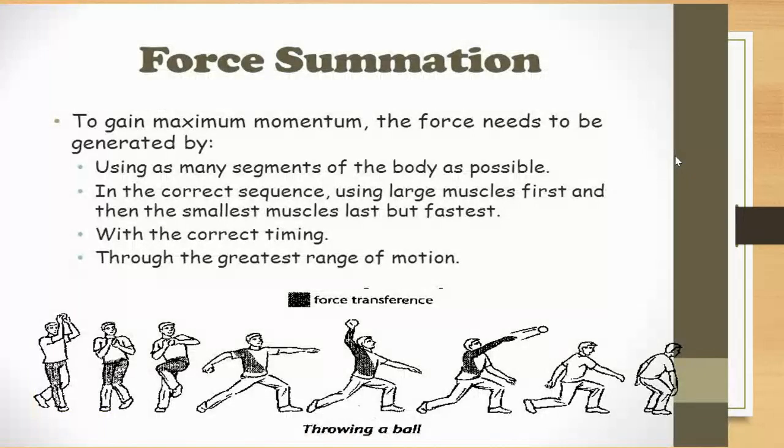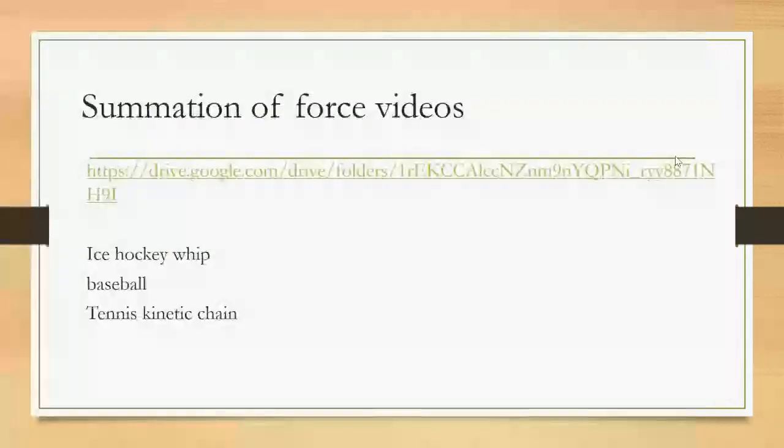That is force summation. Let's sum it up right here. To gain maximum momentum, the force needs to be generated by using as many segments of the body as possible in the correct sequence, using the large muscles first and then the smaller muscles last, but they will be operating the fastest because they've got all that other force behind them, with the correct timing and through the greatest range of motion. If the range of motion that you're moving through is greater, you are going to be generating more force. That is force summation. I hope that makes sense. Here are some other examples. I strongly suggest you go and have a look.